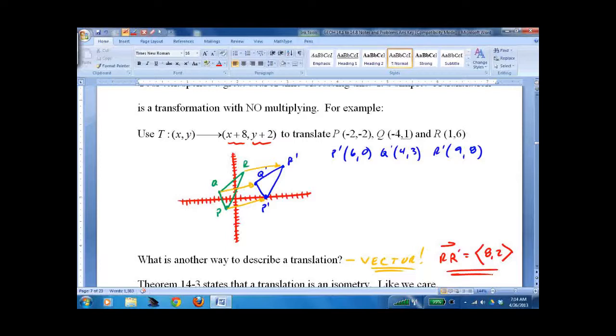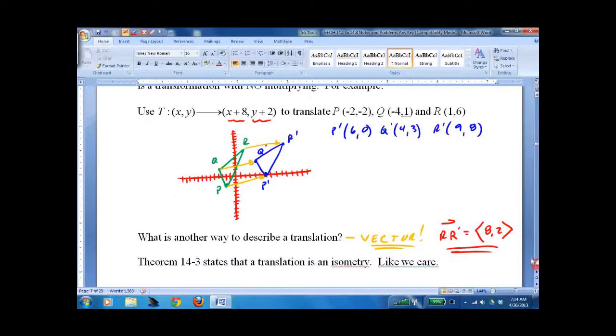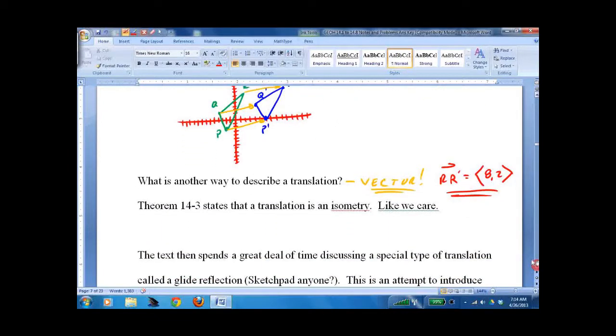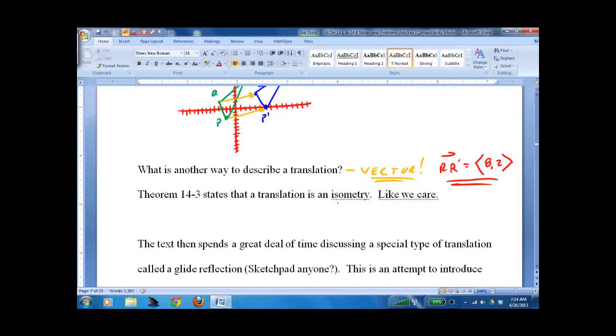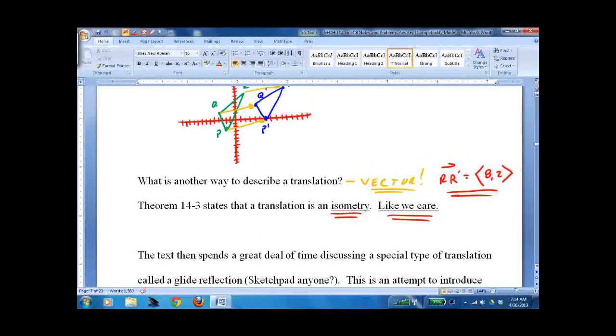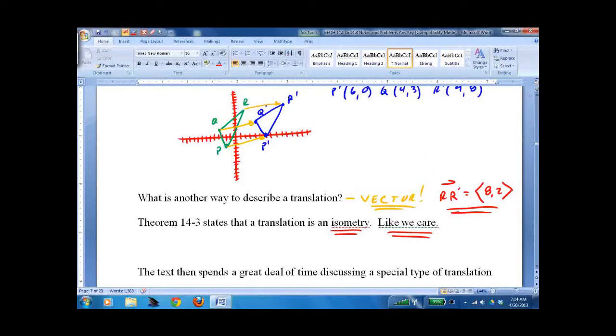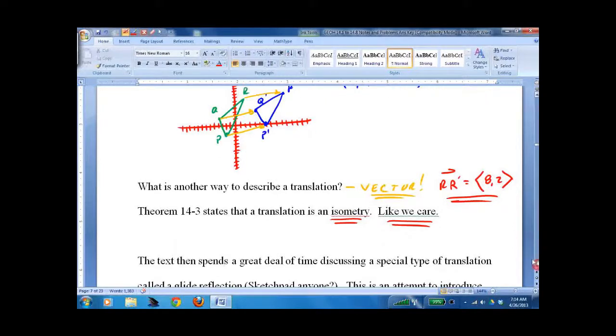But just tying in old stuff with new stuff. So the translation is really not that hard. You're just shifting left and right and up and down. It turns out it's an isometry, like we care. Notice I'm getting a little bitter as my notes get later into the year. But you can look at it and see that the green and the blue have the same shape, same angles, same everything. It's just been moved over.